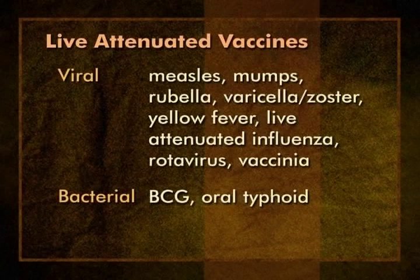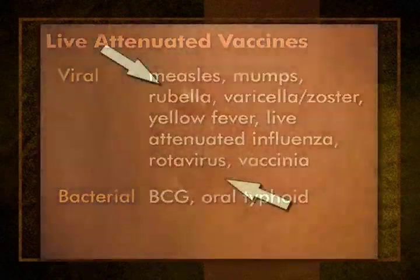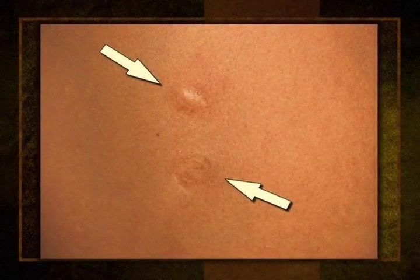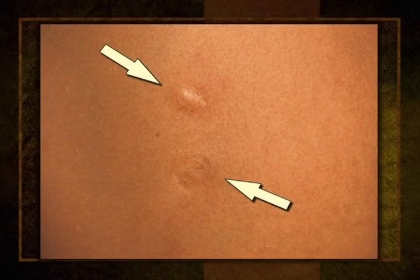Most of you have seen the results of BCG vaccination on the arms of children and adults from other countries. This image shows two circular BCG scars on the arm of a woman from El Salvador. These scars are sometimes confused with those caused by smallpox vaccine. Most of you will not use oral typhoid vaccine either, since it is used almost exclusively among international travelers and the military. So that is the story with live vaccines.